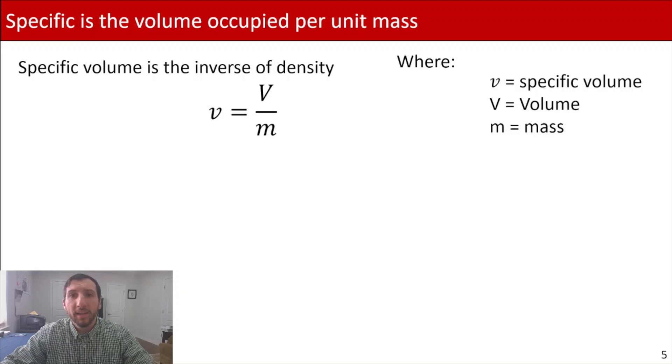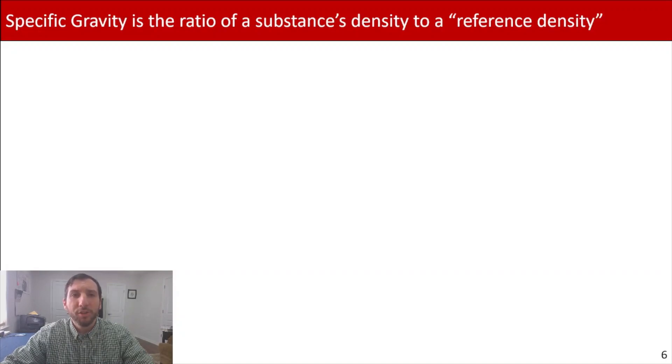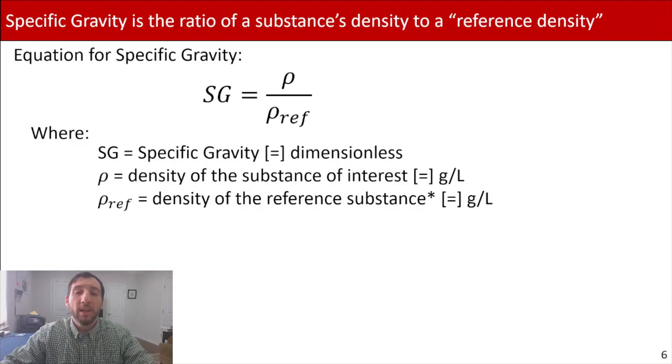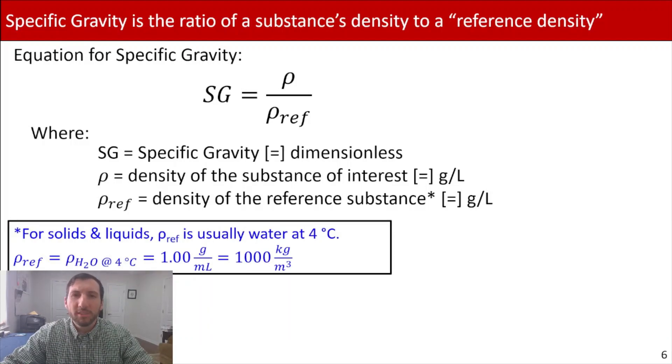Now, another process variable that is tied in pretty heavily with density is something called specific gravity. And specific gravity is the ratio of a substance's density to a reference density. And for us, you write out specific gravity with the following equation, where we have specific gravity, SG is equal to rho over rho reference. So that's the rho is our density of the substance of interest divided by our reference density. And depending again on the state of your materials, you're going to have a different reference substance. So for example, when you're dealing with solids and liquids, your rho reference most commonly is going to be water at four degrees Celsius. In which case, our reference density is one gram per milliliter or a thousand kilograms per meter cubed. Those densities are the same.